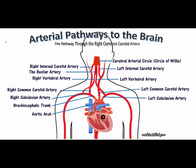Here we'll take a look at the arterial pathways to the brain. Oxygenated blood from the heart is going to travel through the aortic semilunar valve, then up the ascending aorta to the aortic arch.